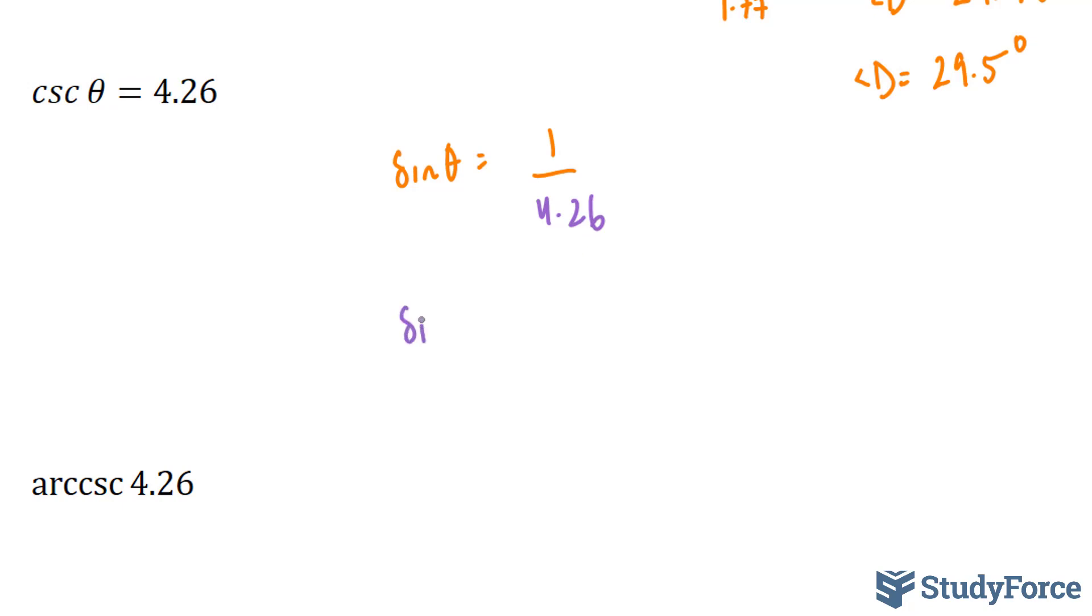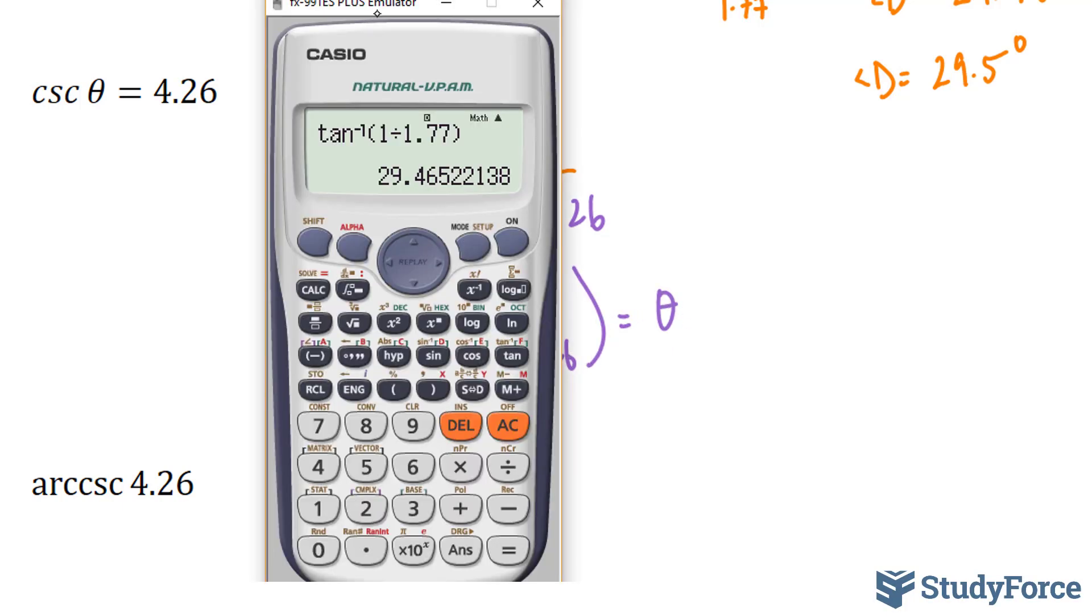So all we have to do is replace this part with 4.26. And then you take the inverse sine of 1 over 4.26. And you end up with your theta, which is equal to, let's do this together.